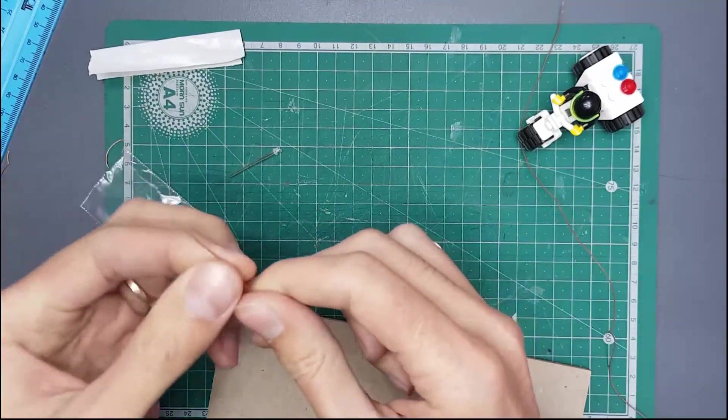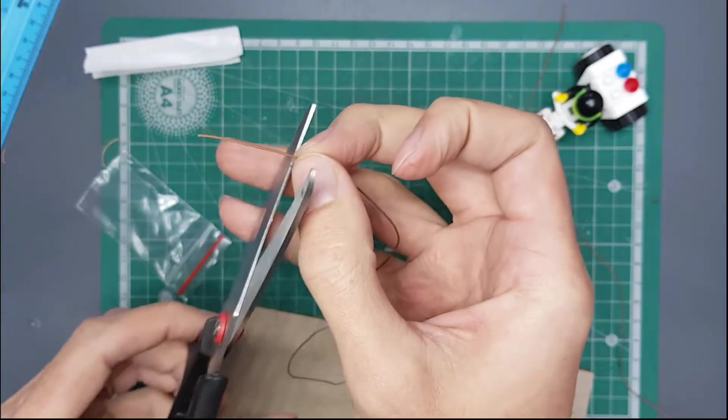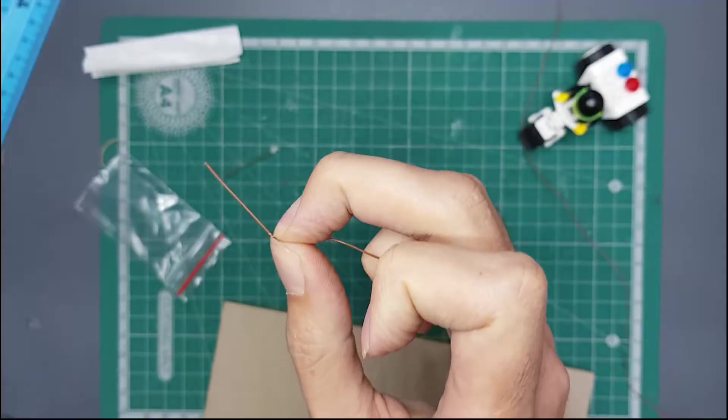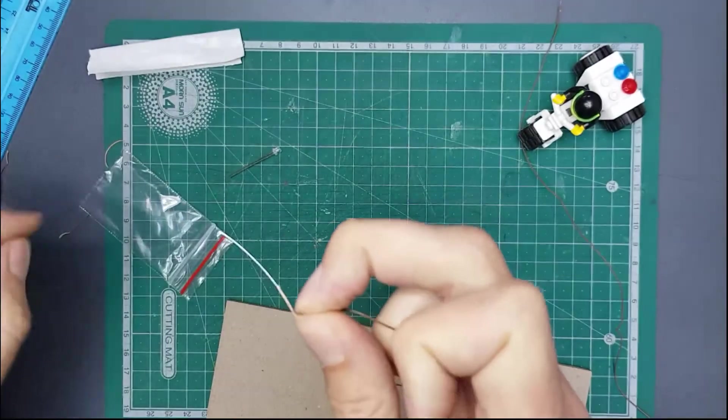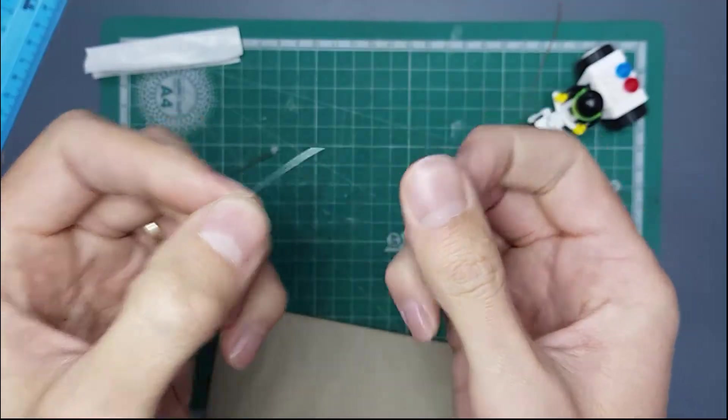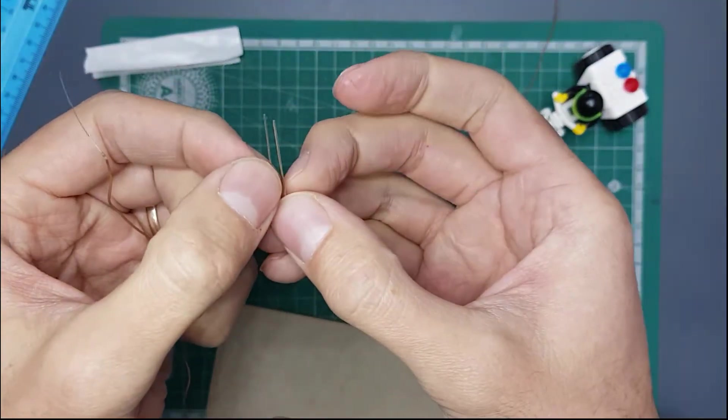I'm going to remove some of the insulation on the other end of this wire. You can see at least two centimeters or so of the wire with the insulation removed to make it easier.